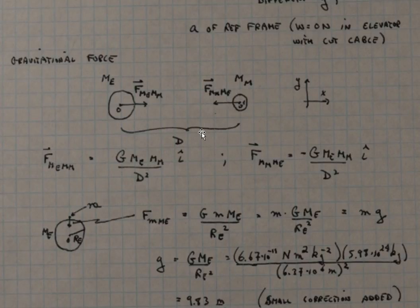If they are separated by a distance d from center to center, then the magnitude of these forces is the universal gravitational constant G times the product of the masses of the two bodies, in this case the mass of the Earth and the mass of the Moon, divided by their distance in meters squared.